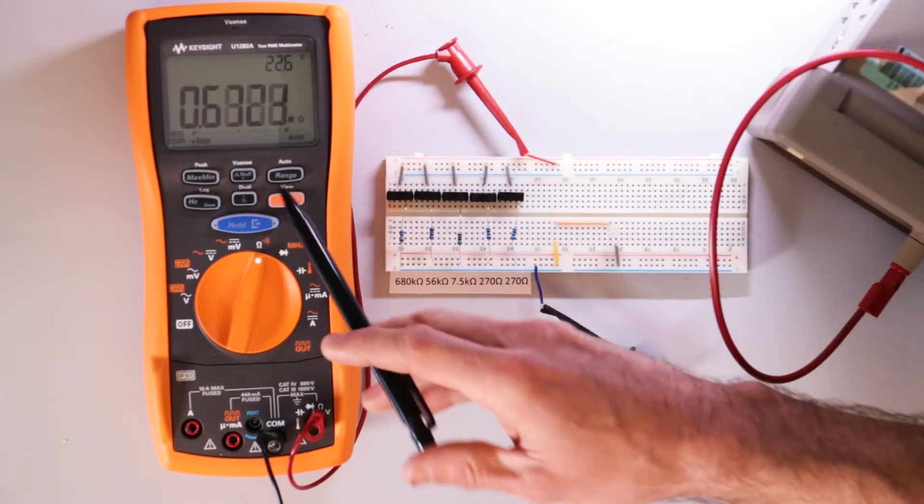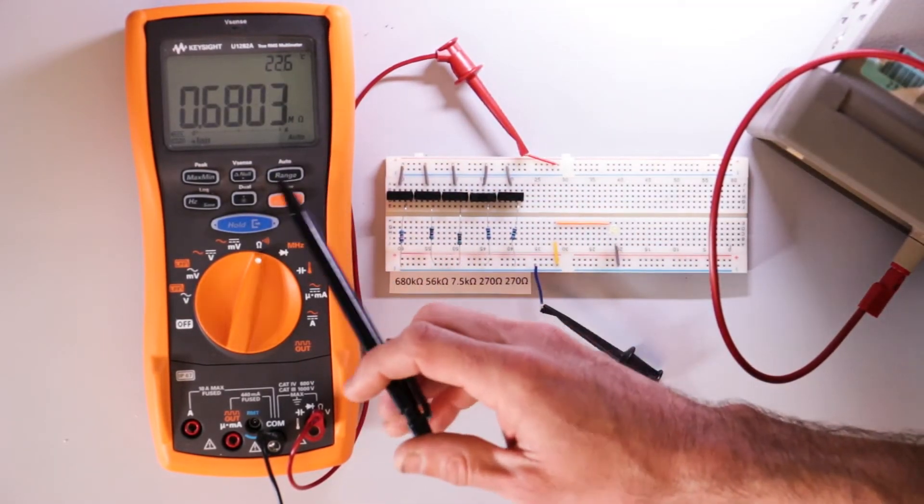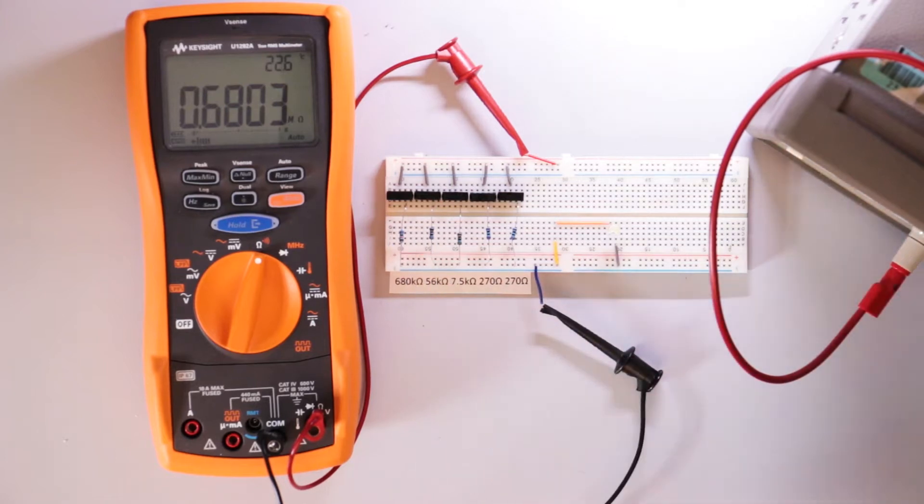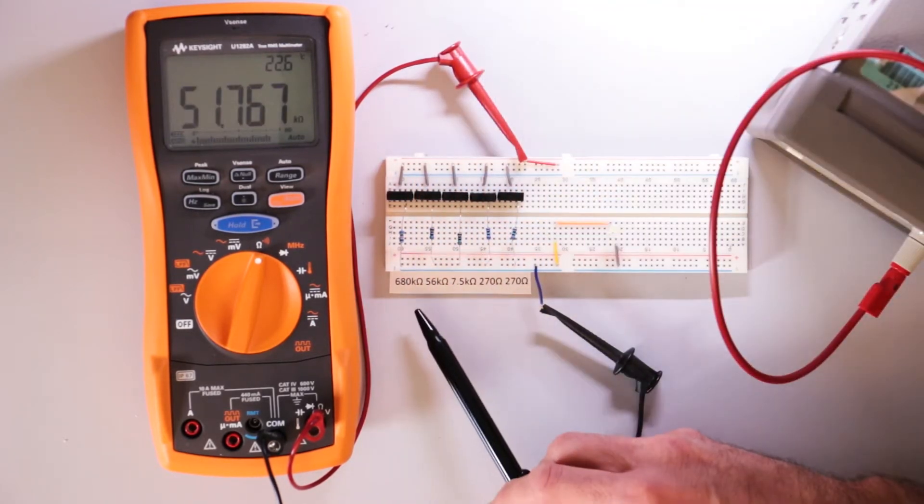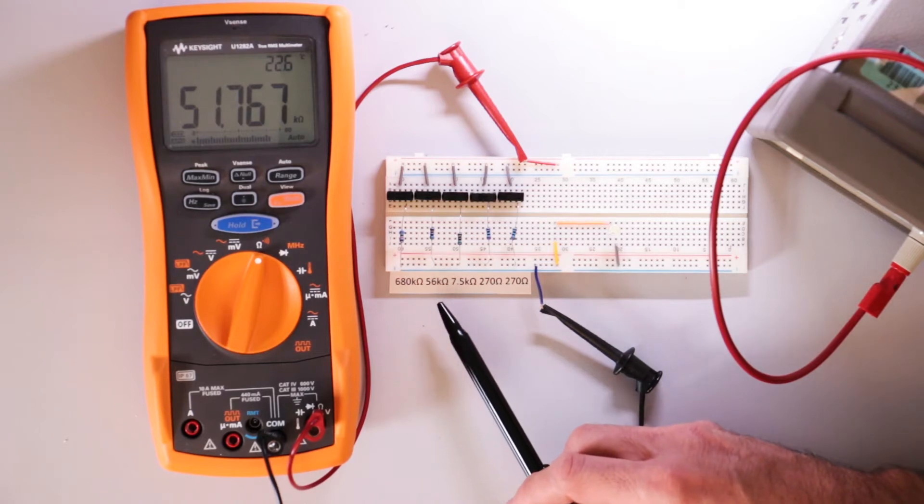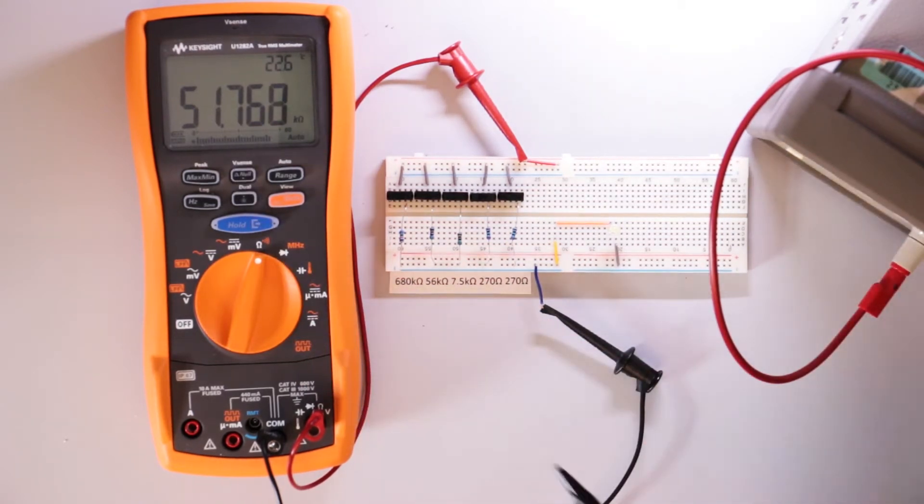As you can see on the DMM here, it's 0.680, but it's in megaohms. So that's the same as 680 kilohms. I'll move the next one over. So now we have 680 kilohms and 56 kilohms in parallel. The total resistance is 51.76.